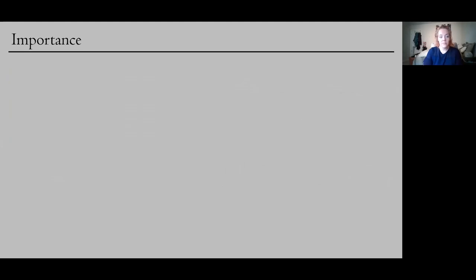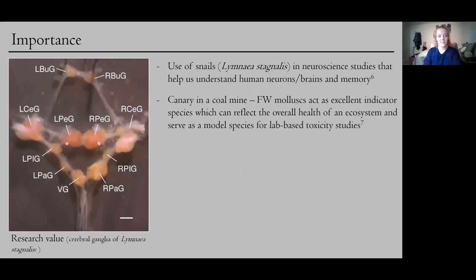They also have really important research value, and maybe not in the way you'd quite expect. So freshwater snails like Limnea stagnalis have actually been used for quite some time in neuroscience research. This image here shows you the cerebral ganglia of the Limnea stagnalis. They have these big chunky ganglia that are all attached in a ring and serve as sort of a prototypical brain, but they're really easy to look at and manipulate. And that's what's given us a major insight into human memory and neuron and brain activity. And then along the lines of my research, freshwater molluscs are also considered a canary in a coal mine. So if you've ever heard that expression, it just means that they can kind of tell us just how healthy the ecosystem is that they're living in. And when the molluscs start to not do so well, we know that the river is not going to be doing so well. We can also take them back to the lab and they serve as model organisms for lab-based toxicity studies, which teaches us about the potential risks that contaminants might pose in the actual ecosystem.